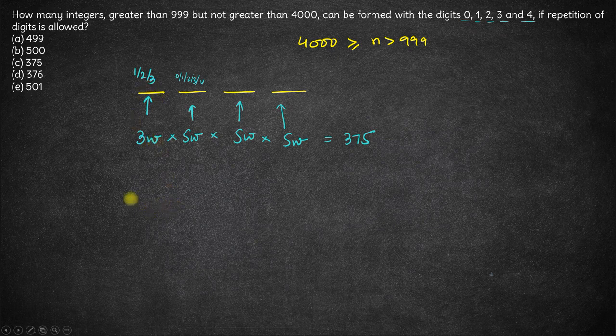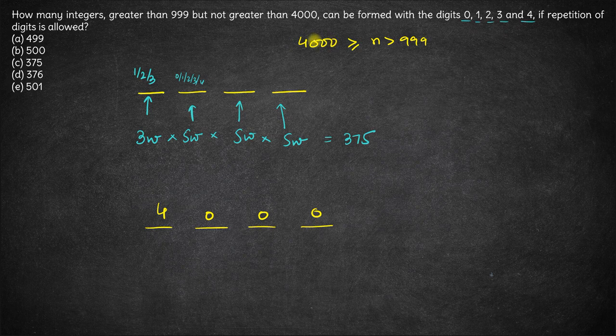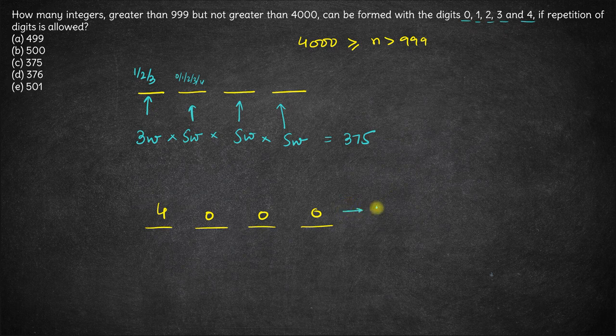Now, number starting with 4. Now a number if it starts with 4, the digits over here can only be 0, 0 and 0 because it cannot be more than 4000. So here we have only one possibility. There is only one number which is possible starting with 4.